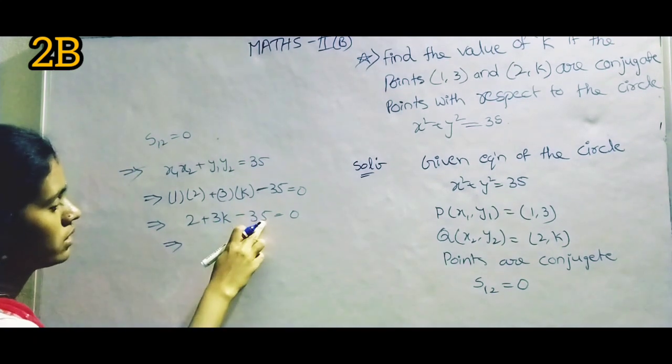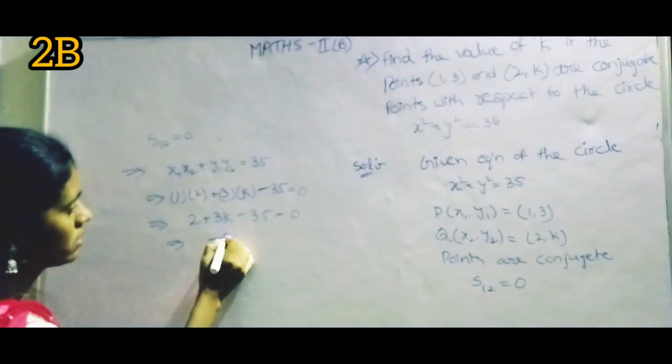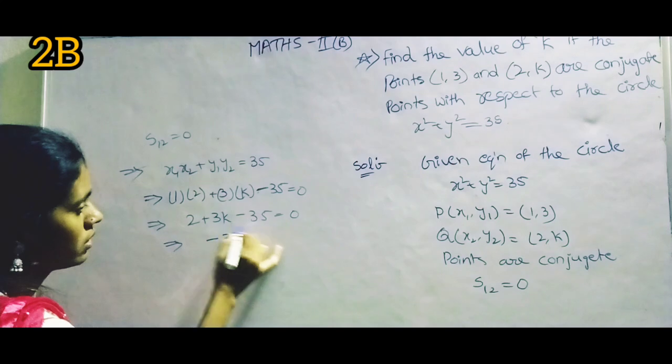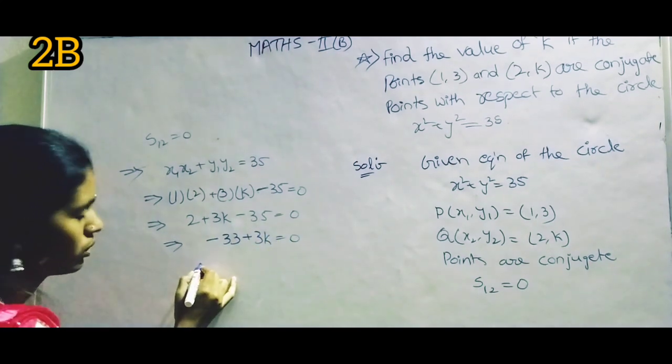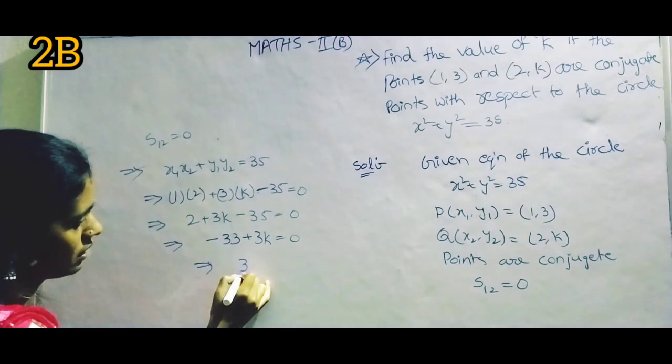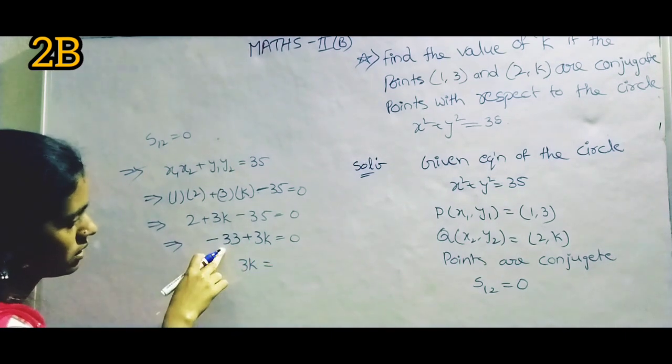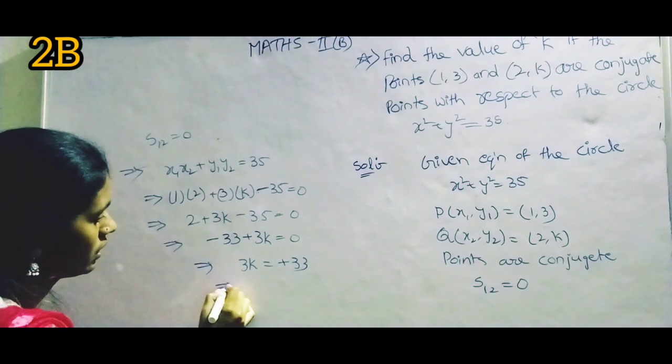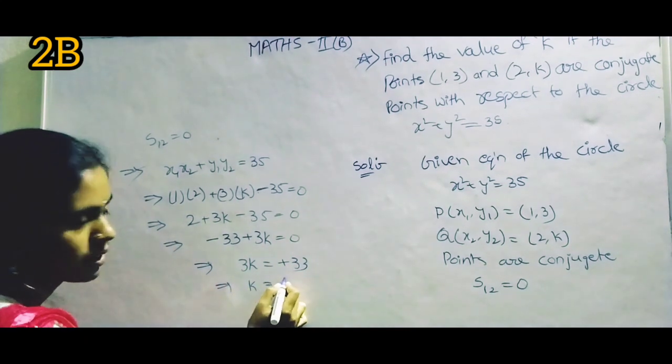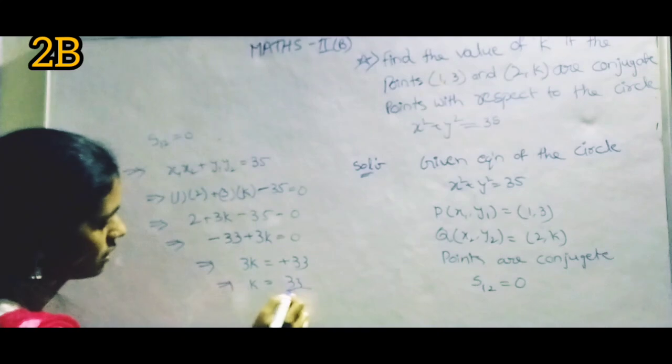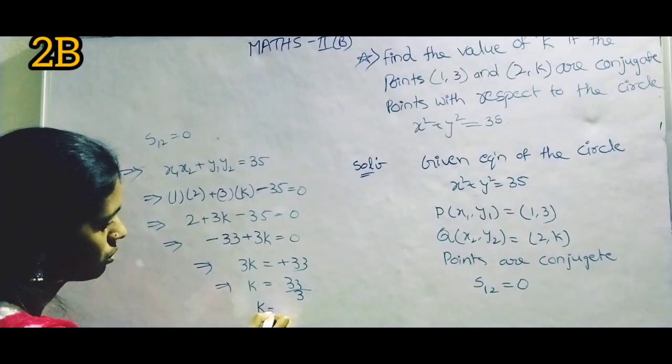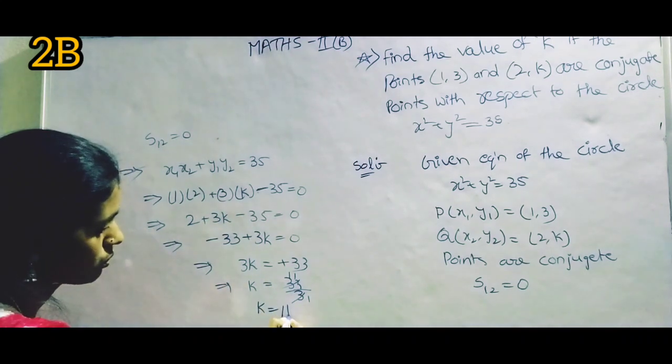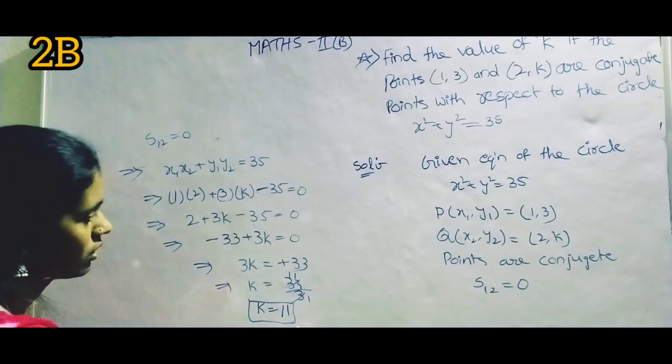2 - 35 = -33, so -33 + 3k = 0. That implies 3k = 33, therefore k = 11.